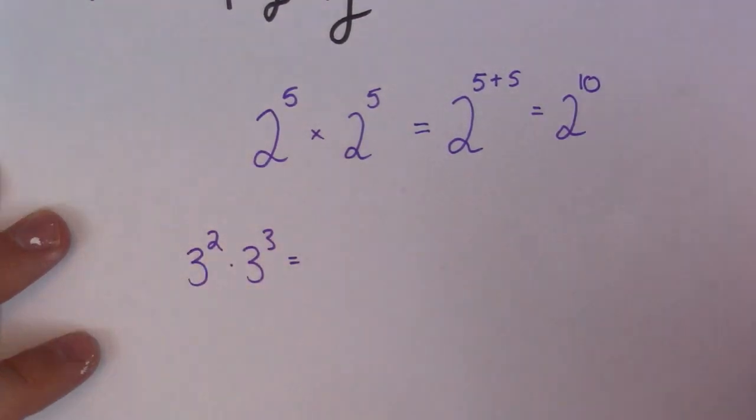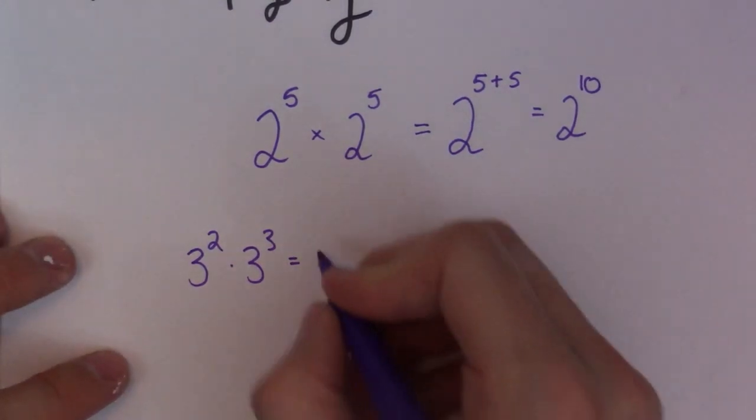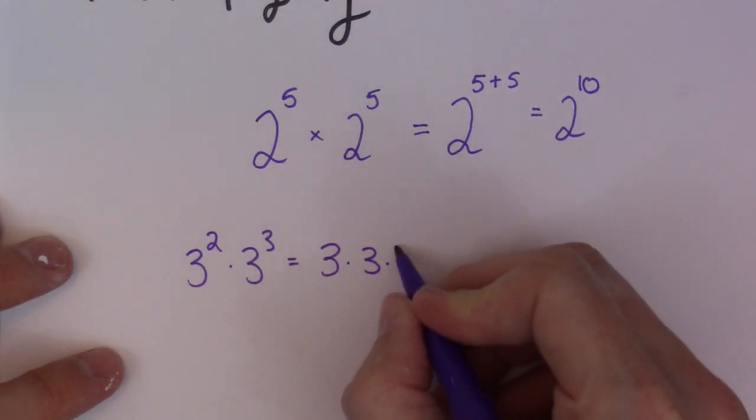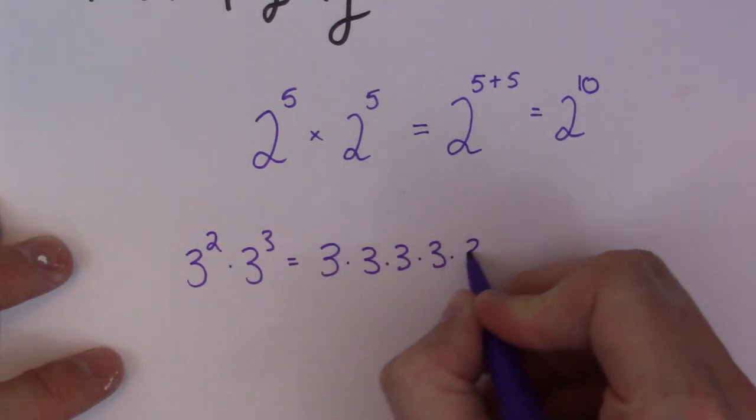So, if I wrote this out in sort of long form, 3 to the 2 is 3 times 3. 3 times 3. 3 to the 3 is 3 times 3 times 3. So,